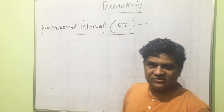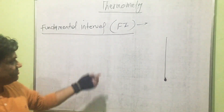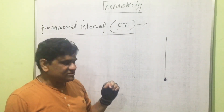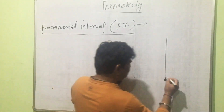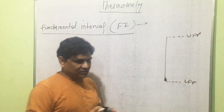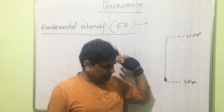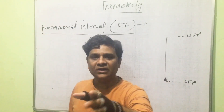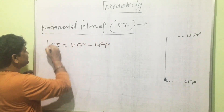Hello dear students. Today's topic in thermometry is fundamental interval. Here is a diagram of a thermometer having two fixed points: one is the lower fixed point (LFP) and the other is the upper fixed point (UFP). Fundamental interval is the difference between the upper fixed point and the lower fixed point — that is, fundamental interval equals upper fixed point minus lower fixed point.